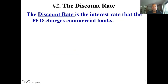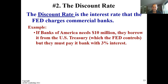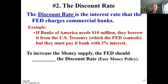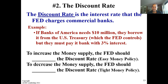Two: the discount rate. The discount rate is the interest rate that the Fed charges commercial banks. For example, if Bank of America needs $10 million, they borrow it from the U.S. Treasury, which the Fed controls, but must pay it back with a 3% interest rate. The Fed is really the banker to the banks. To increase the money supply, the Fed should decrease the discount rate — easy money policy. To decrease the money supply, the Fed should increase the discount rate — tight money policy.